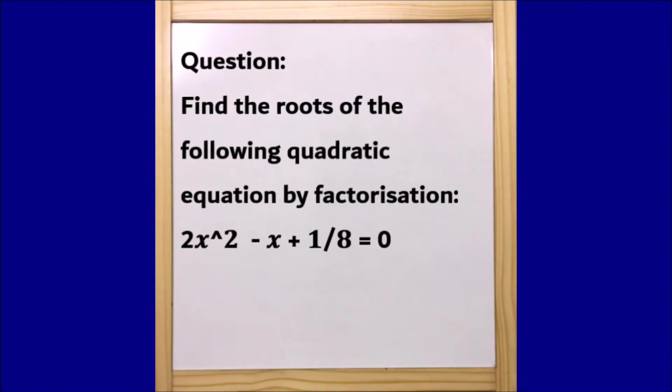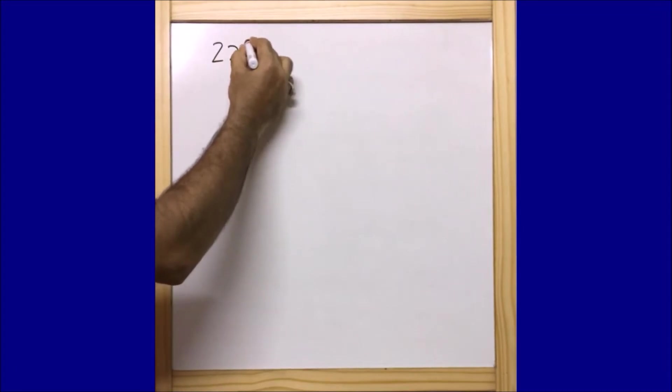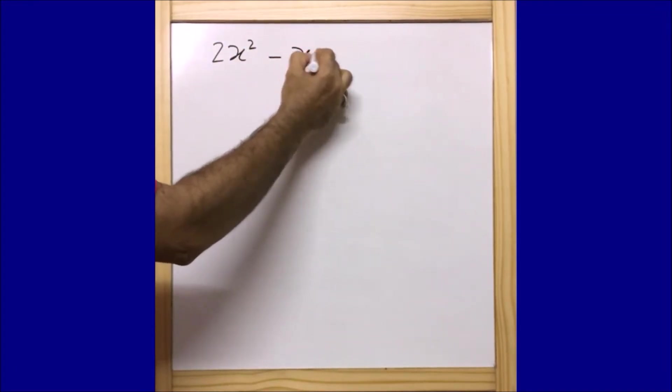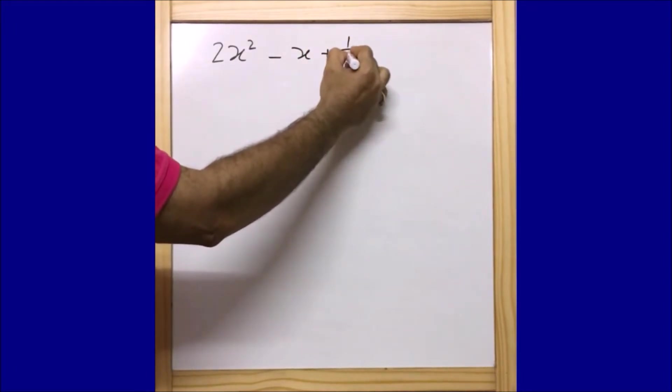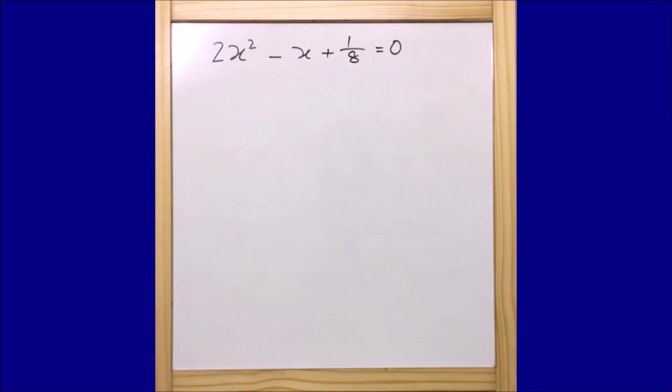Let me first of all write down this equation on the board here. The given equation is 2x^2 - x + 1/8 = 0. Okay, so this is the equation that we have.